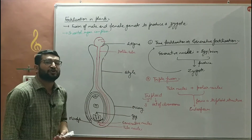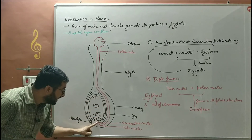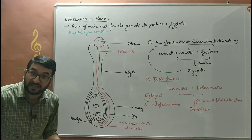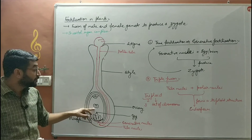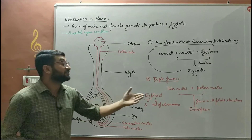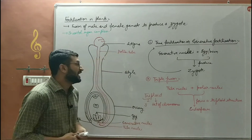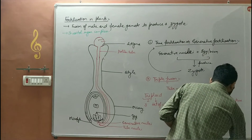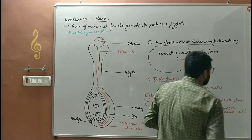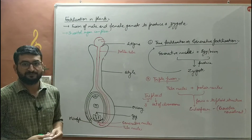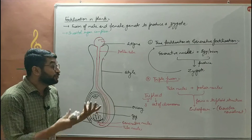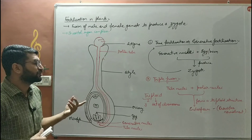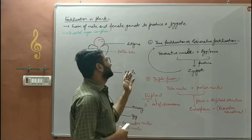A very important definition for your board exam: what is triple fusion? The fusion of the tube nucleus — the second pollen grain nucleus — with the polar nuclei to form a triploid structure is known as triple fusion. The function of endosperm is that it provides nourishment to the developing zygote in the embryonic stage. This endosperm provides nutrition to the developing zygote, which will develop into a seed and eventually a plant.